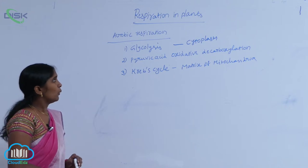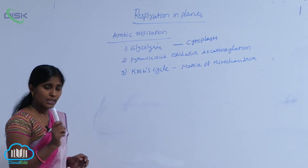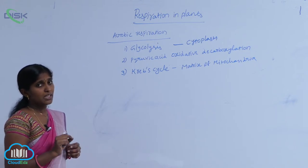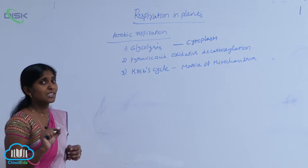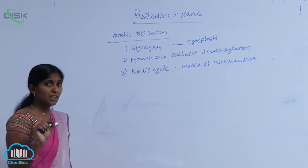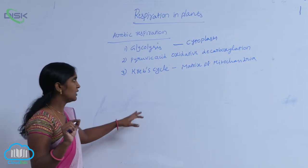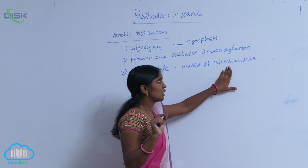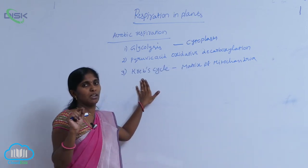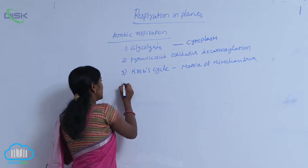Where is the pyruvic acid formed? At the cytoplasm, pyruvic acid is formed. The pyruvic acid is then converted into acetyl-CoA by the intermediate reaction, and the acetyl-CoA enters the matrix of mitochondria, where the Krebs cycle is carried out.